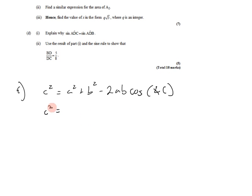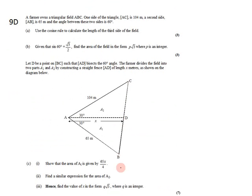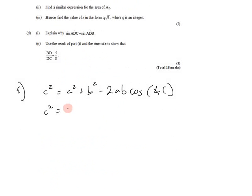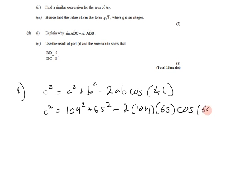In this case, side C is the side that we're trying to find. We know it's side C because it's opposite the angle between the two sides that we know. So those two sides are A and B, and the angle between them is 60 degrees. We have our two sides: one was 104 meters squared, and the other side was 65 meters, and we'll square that.